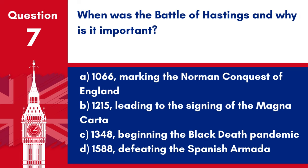Question 7. When was the Battle of Hastings and why is it important? A. 1066, marking the Norman Conquest of England. B. 1215, leading to the signing of the Magna Carta. C. 1348, beginning the Black Death pandemic. D. 1588, defeating the Spanish Armada. Answer: A. 1066, marking the Norman Conquest of England. The Battle of Hastings occurred in 1066 and is important as it marked the Norman Conquest of England.